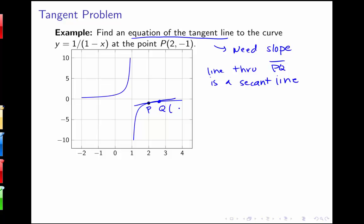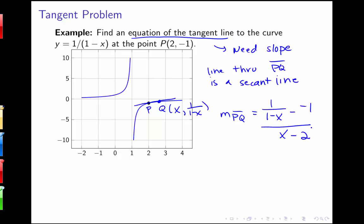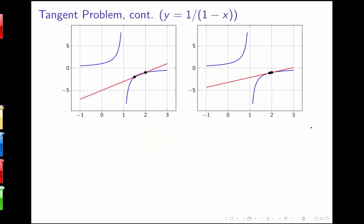We can think of q as having coordinates x comma 1 over 1 minus x. So we can talk about finding the slope of the secant line pq as rise over run: 1 over 1 minus x minus negative 1, all over x minus 2. We're going to look at these slopes for values of x getting closer and closer to 2.